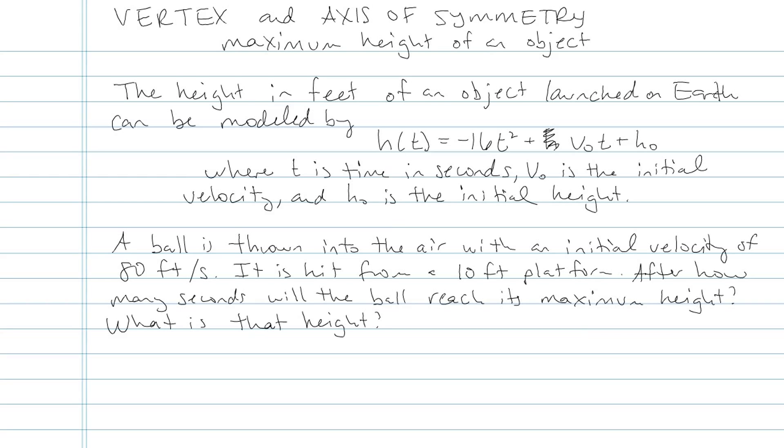Always on Earth, the height of an object launched can be modeled by h(t), and that means height as a function of time. It doesn't mean height times time. It's function notation. Equals -16t² plus v₀, which we call v naught or the initial velocity times time, plus h₀. Now these little zeros represent subscripts. They mean the initial something. So initial velocity and initial height.